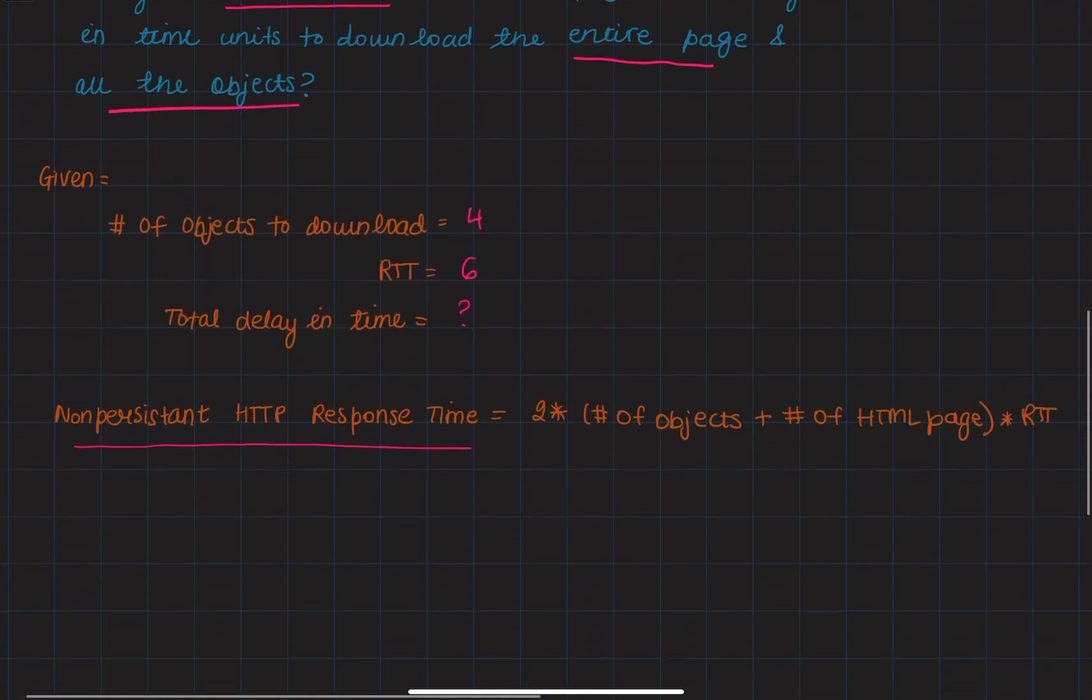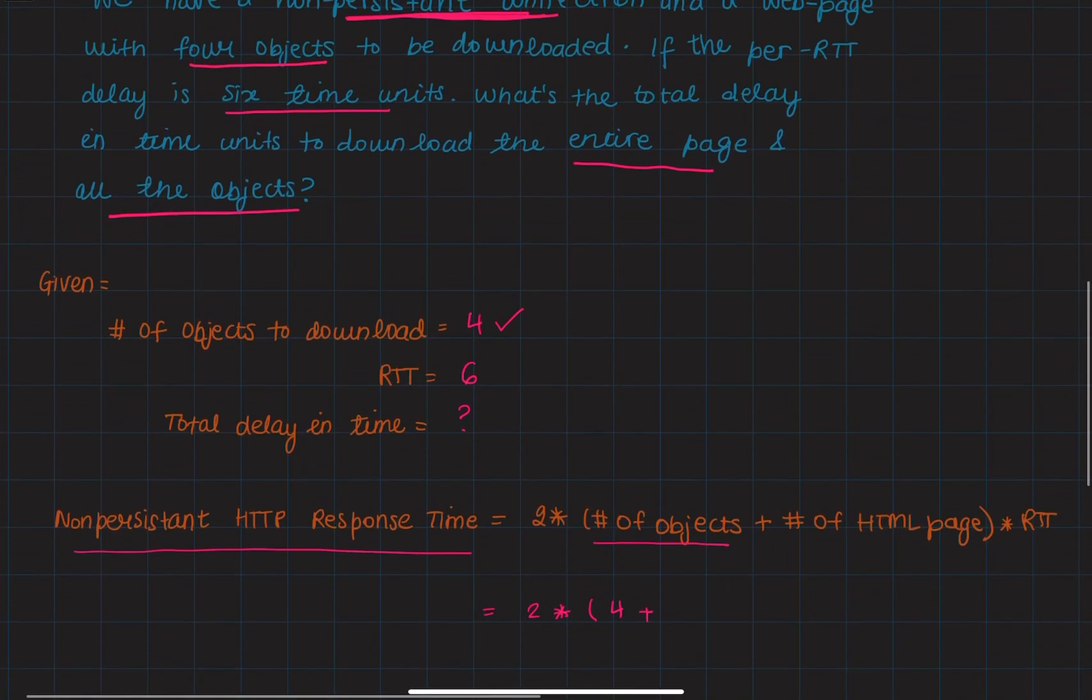So our equation is two times the number of objects. So let's go ahead and start filling this out. We have four objects plus the number of HTML pages, which in this case is just one,